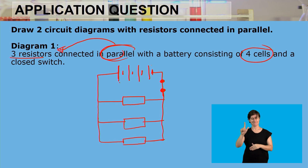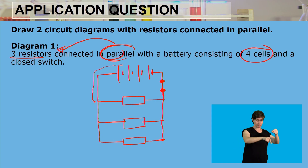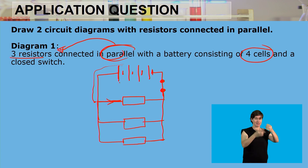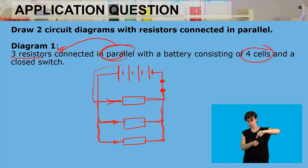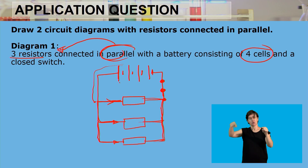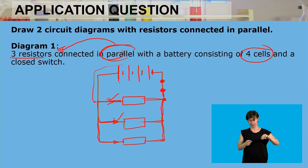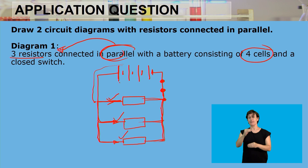As the current moves from the negative terminal to the positive terminal, when it reaches the junction, it has to divide. Some of the current will go through the first resistor, some through the second resistor, and the remaining current through the third resistor. After passing through the resistors, when they meet up again, they will equal the total current of the entire circuit — the sum of currents through all three resistors equals the total current.